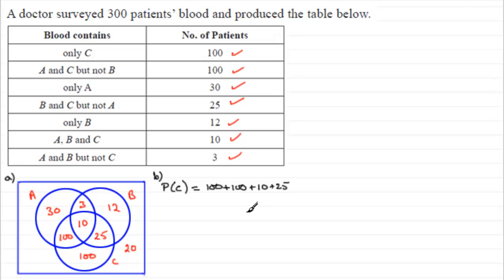We've got 100 plus 100 plus 10 plus 25. That's the number of patients then that have substance C in their blood out of, so we'll put that over 300. And if you work that out.